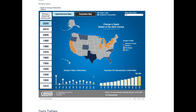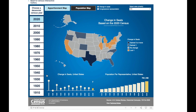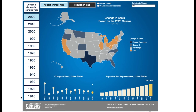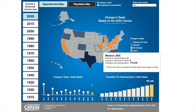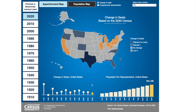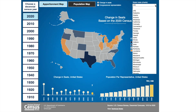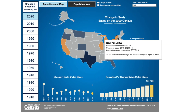This interactive map includes historical data for each census between 1910 and 2020. It allows you to visualize data in so many ways. The default view for this map is the United States, but it allows you to access data for each of the 50 states. You can use the drop-down menu or just click on the state on the map.